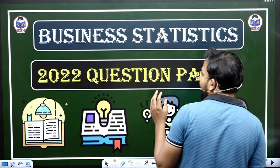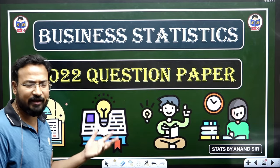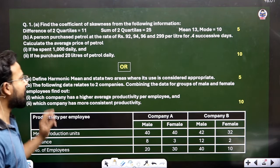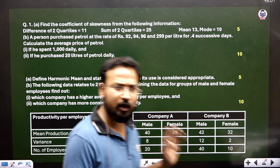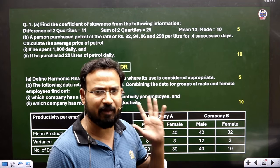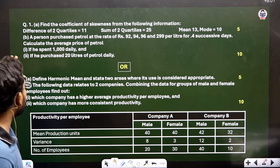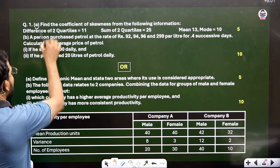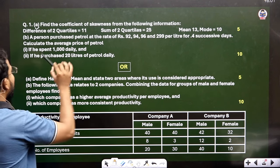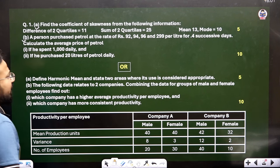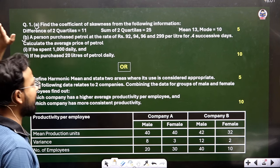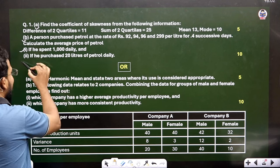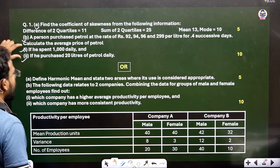Now, let's look at the paper pattern. Each question carries 15 marks, and the total paper is 75 marks with 5 questions. For example, question 1 may ask: find the coefficient of skewness from the following information — that's 5 marks in part A. Part B might ask: a person purchases petrol at rates of 92, 94, 96, and 99 rupees per litre on successive days — calculate the average price if he spent 1000 rupees daily or purchased 20 litres daily. So two sub-questions make up the 10 marks in part B.